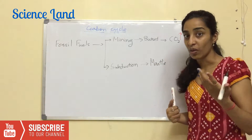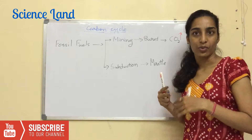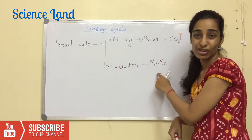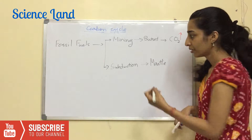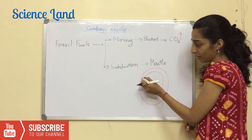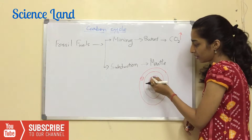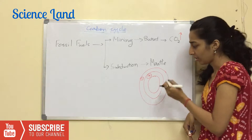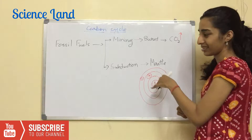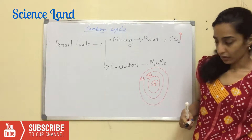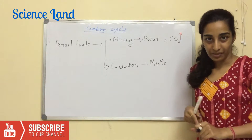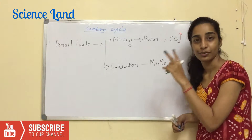Through subduction it reaches a point called the mantle. You may have heard of the mantle — volcanoes erupt magma, and magma originates from the mantle. The earth has three layers: earth's crust, earth's mantle, and the core. The mantle is the second layer of the earth.